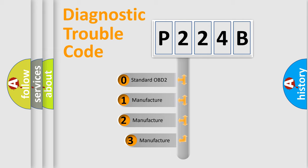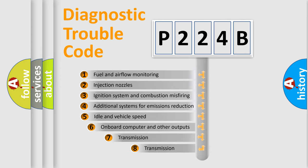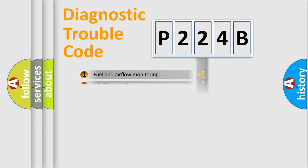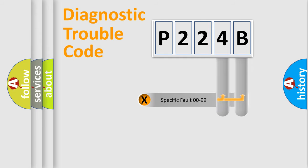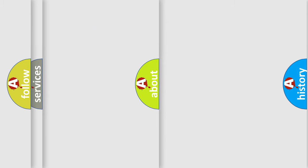If the second character is expressed as zero, it is a standardized error. In the case of numbers 1, 2, 3, it is a manufacturer-specific error. The third character specifies a subset of errors. The distribution shown is valid only for the standardized DTC code. Only the last two characters define the specific fault of the group. Let's not forget that such a division is valid only if the second character code is expressed by the number zero.